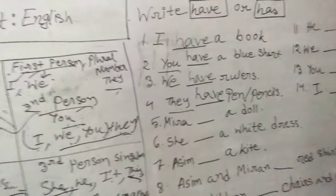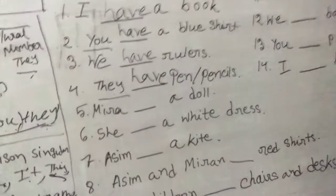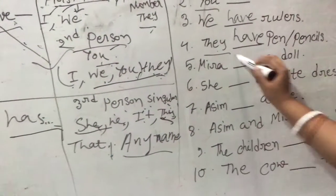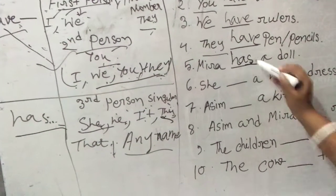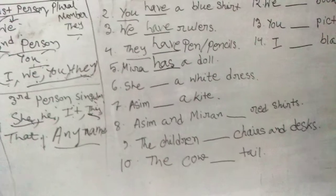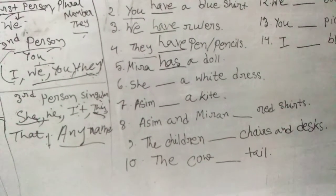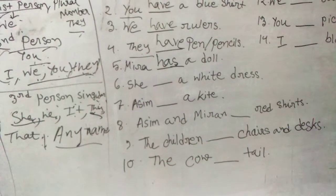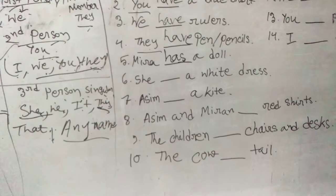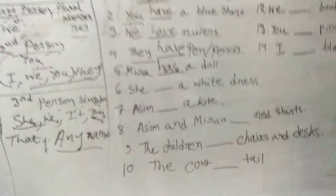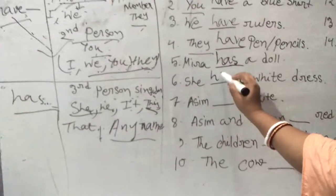Number five: 'Mira ___ a doll.' Mira — I told you that any name is a third person singular number. So after any name, put 'has': Mira has a doll. Number six: 'She ___ a white dress.' Is 'she' first, second, or third person? She is third person, and only one person is indicated — so it is third person singular number. After third person singular number we use 'has': she has a white dress.